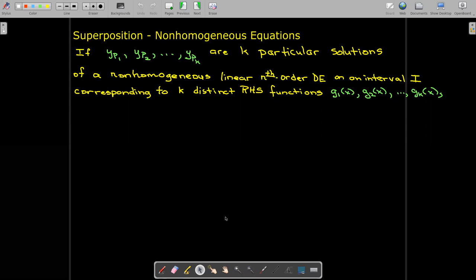So if I have k particular solutions, each one of those particular solutions are going to correspond to different right-hand side functions. But what I can say then is if I take the sum of those